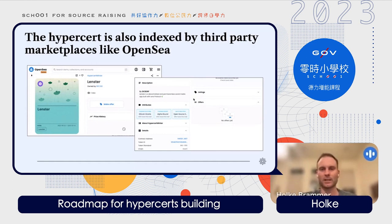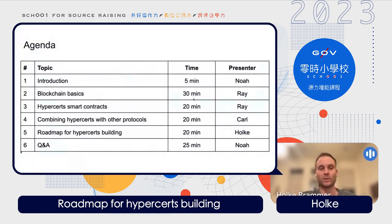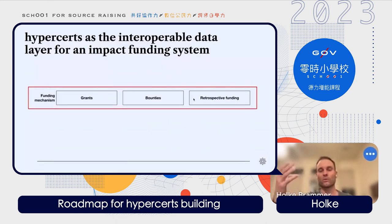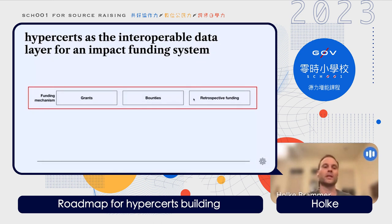Now I'll zoom out and look forward at what comes next for the Hypercerts protocol and the Hypercerts foundation. The reason we think of Hypercerts as such a general primitive for funding mechanisms is that it is applicable to grants, bounties, and retrospective funding — which are quite different types of funding, whether you're paying for future work, something clearly defined, or something retrospectively evaluated as impactful and funded afterwards.